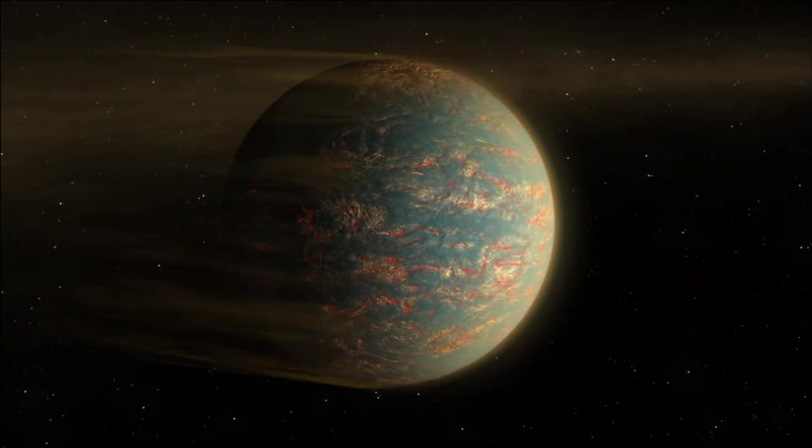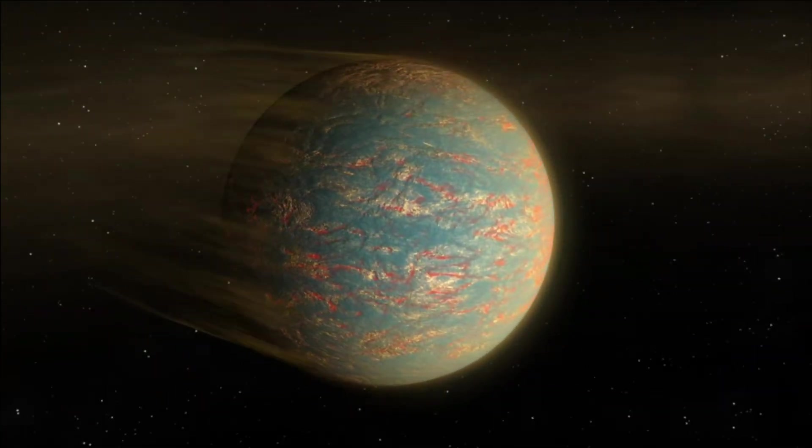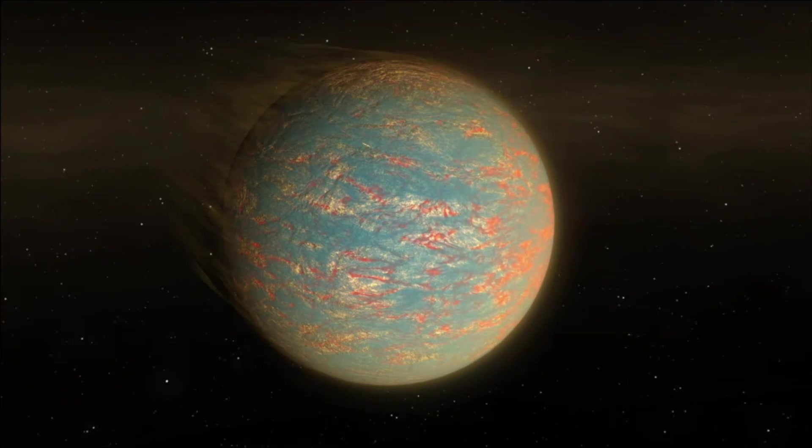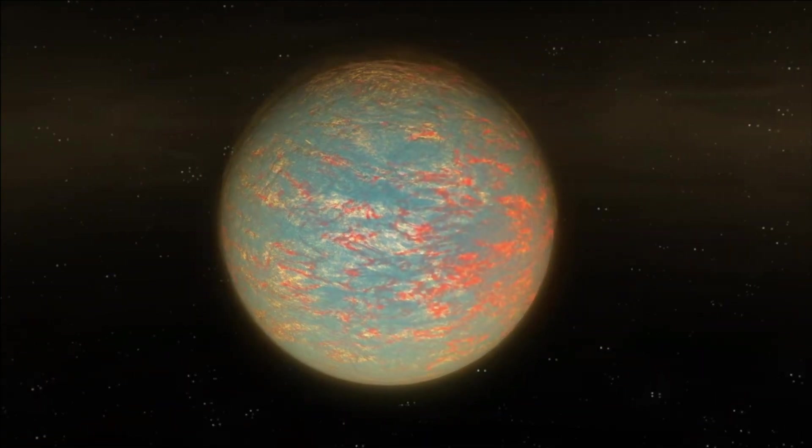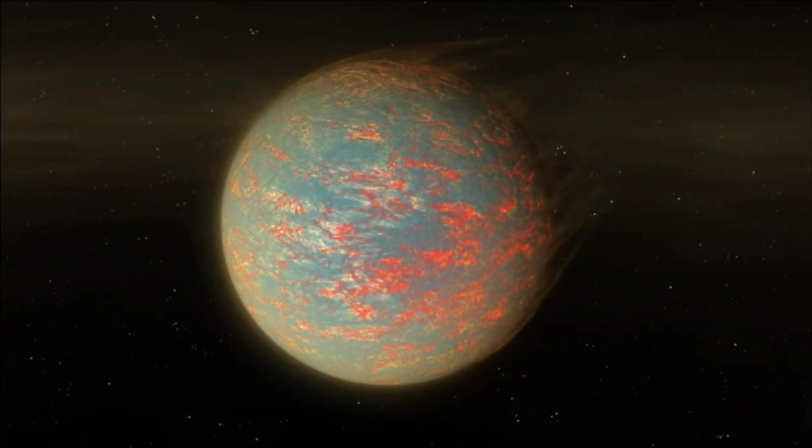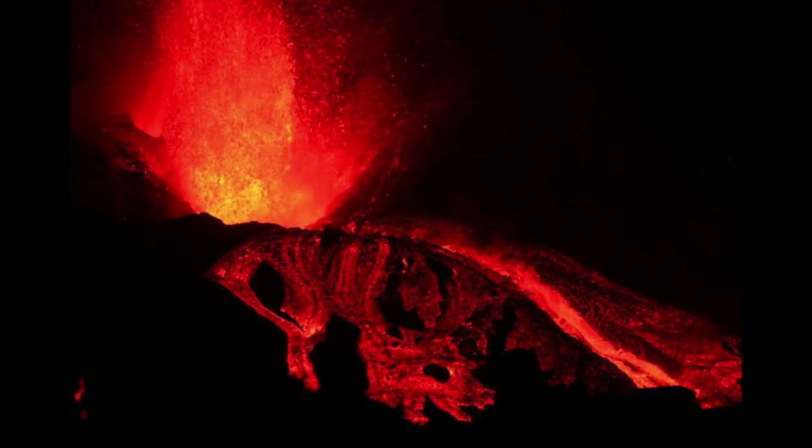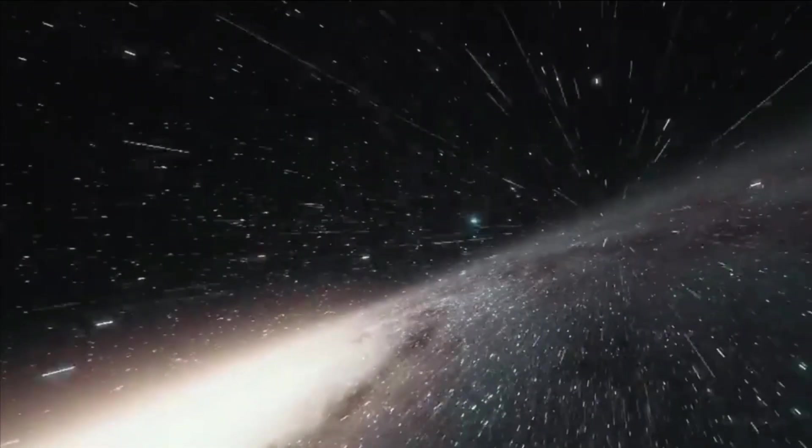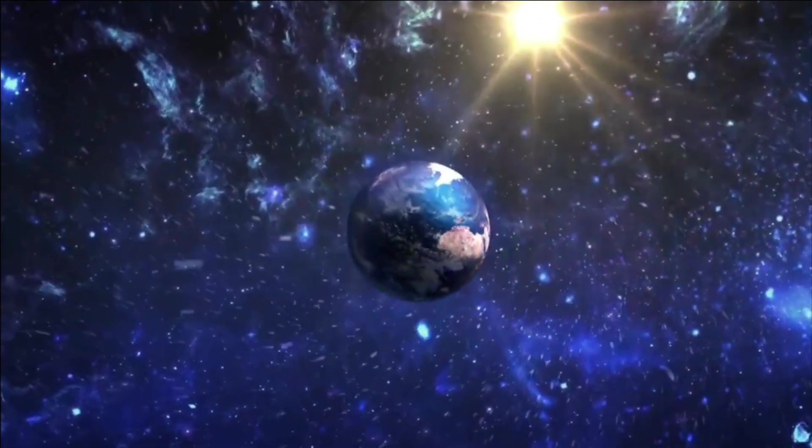While being tidally locked with its parent star, 55 Cancri e has an extreme 2300 Celsius, enough to roast and evaporate metals. As temperature changes variedly due to this, many volcanic eruptions and activities have occurred on the planet.